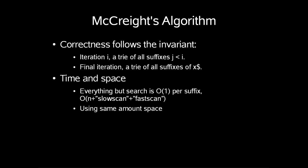Now how do we prove correctness? Well it actually follows from the invariant. At iteration i we have a tree of all suffixes j less than i. After the final iteration we have a tree of all suffixes of x followed by the dollar sign. So we have the suffix tree of x.